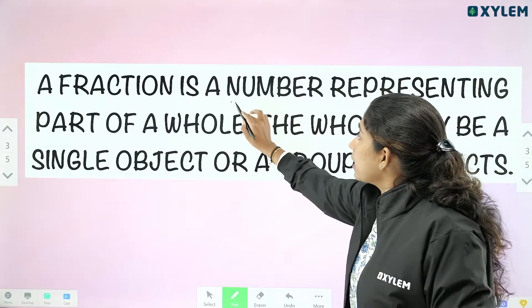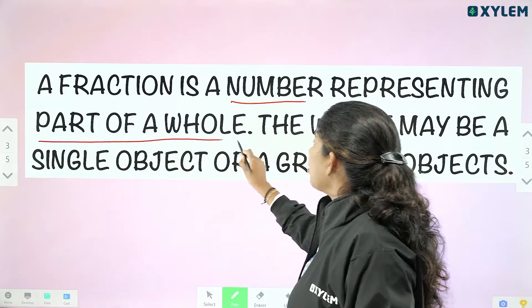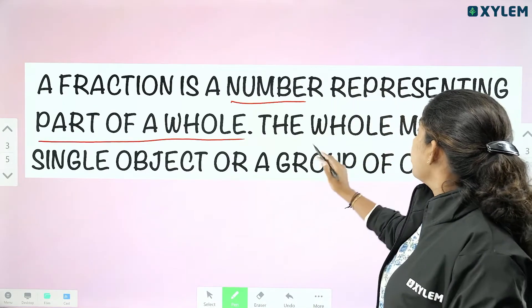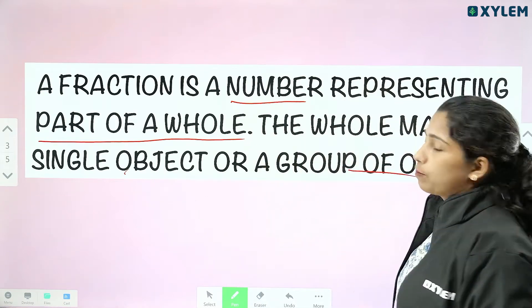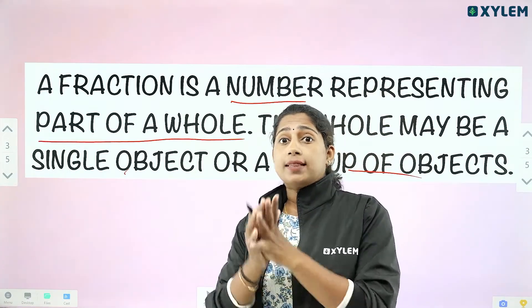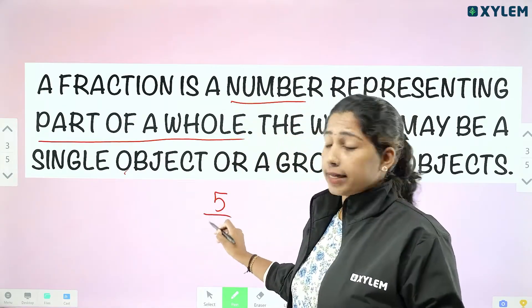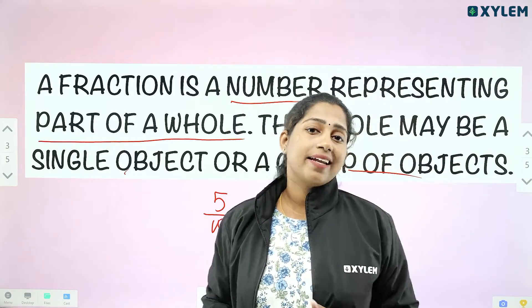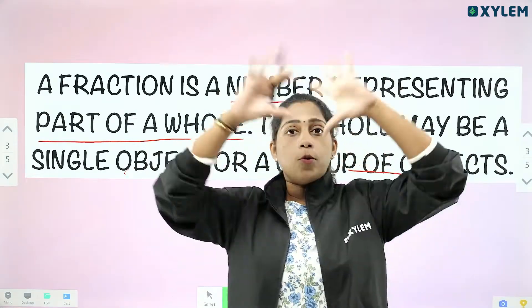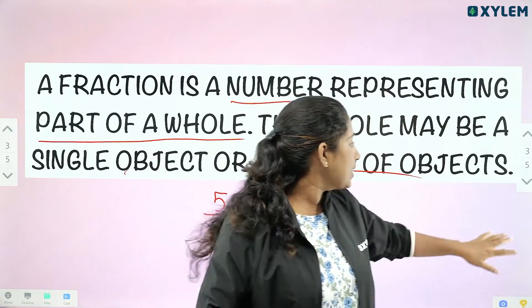A fraction is a number representing a part of a whole. This is important — part of a whole. The whole may be a single object or a group of objects. A cake is a single object. A group of objects — for example, 10 chocolates: how much chocolate is 5 out of 10? That is 5 by 10. That is the fraction — how much is out of the total number.